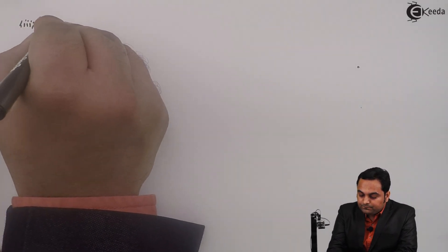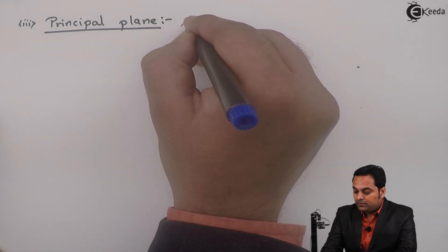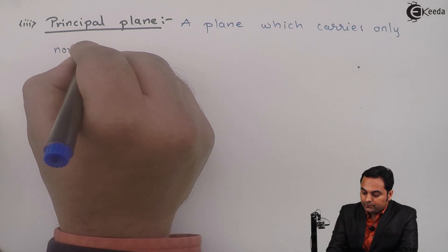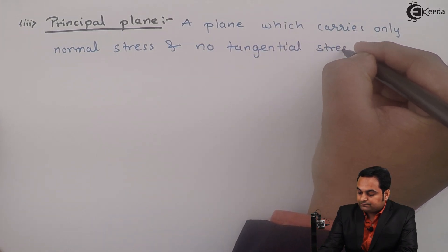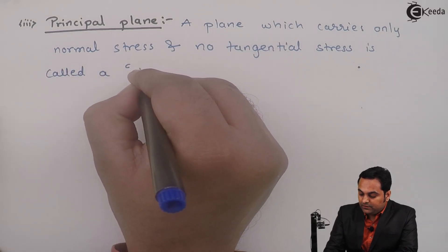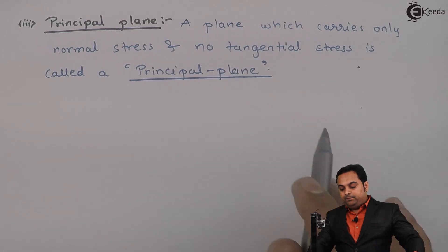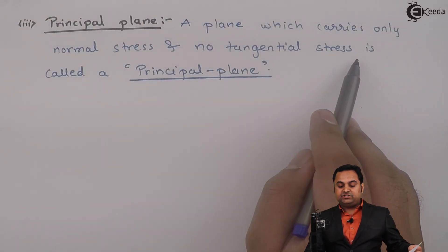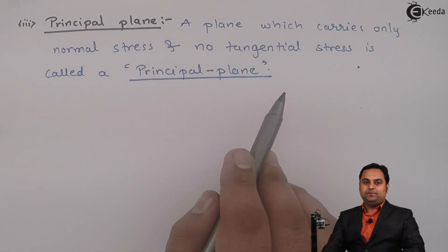The third definition is principal plane. A principal plane is a plane which carries only normal stress and no tangential stress. So a plane which contains only Sigma N — the normal stress — and no Sigma T is called a principal plane.